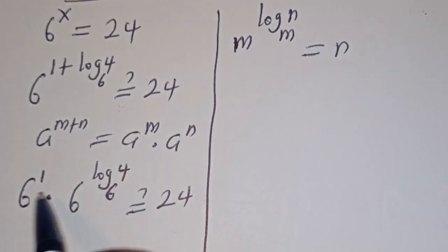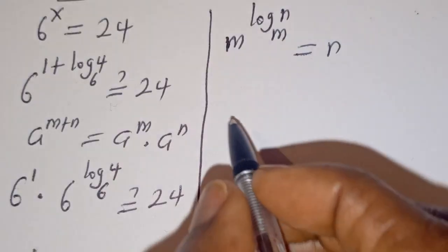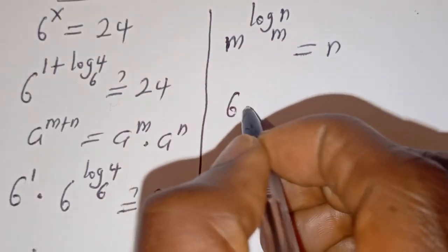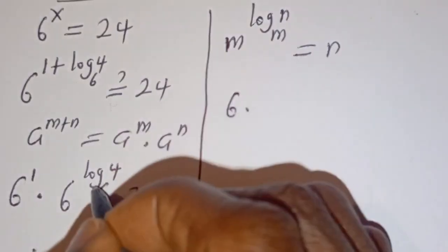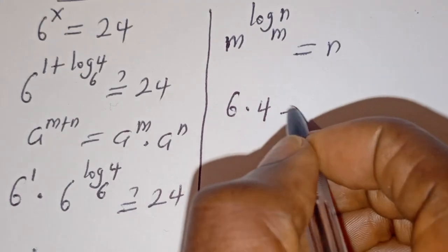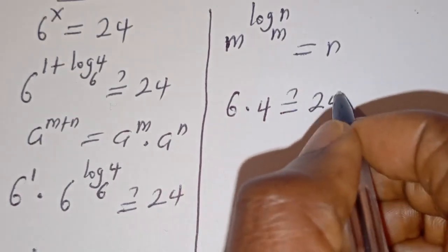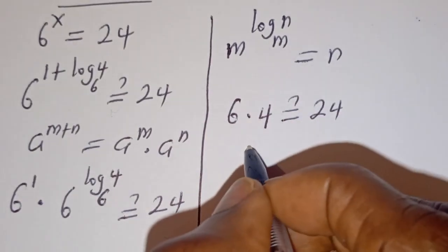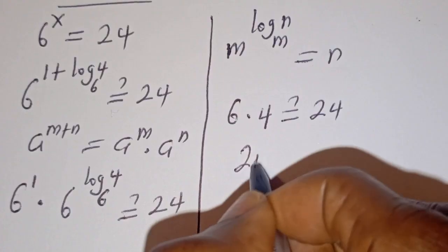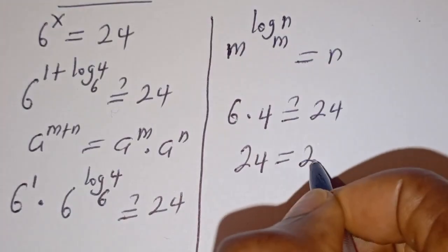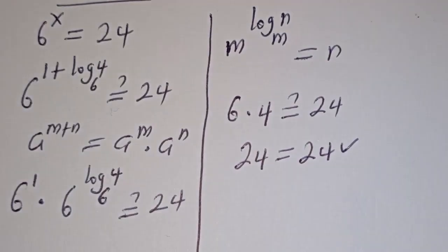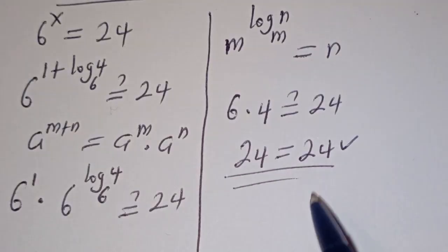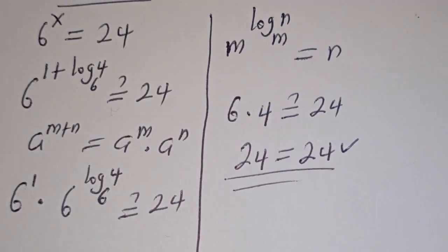Then the whole expression can be written as 6 to the power of 1, that is 6, multiplied by 4, must be equal to 24. And 6 multiplied by 4 is 24, which equals 24 — that is true. That confirms the first method. Let's now consider the second method.